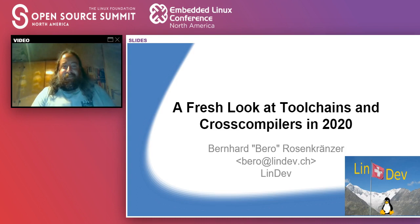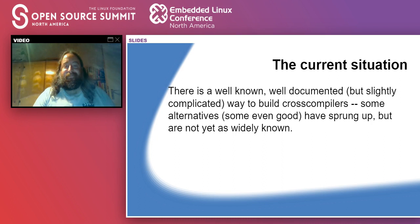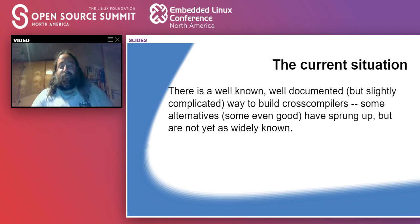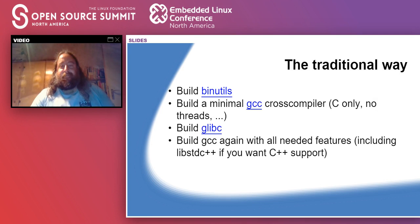This talk is going to be about toolchains and cross compilers and what has changed, because not everything is the same as it used to be some 20 years ago. The current situation is that there's one really well-known, well-documented, slightly complicated way to build it all — getting binutils, gcc, and glibc — and there are also a couple of alternatives that not a lot of people are aware of. We're going to look at what those alternatives are, where it makes sense to use them, and where it makes sense to stay with the traditional way.